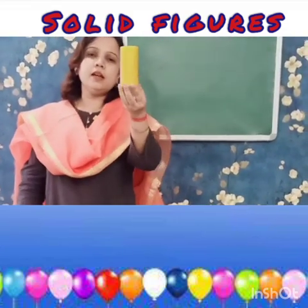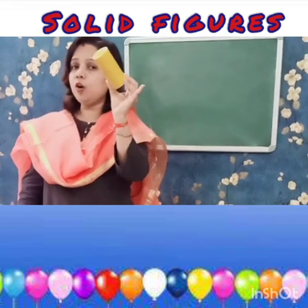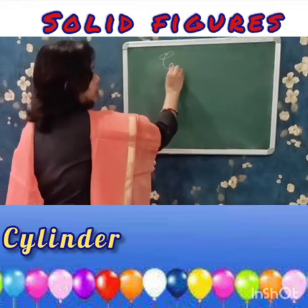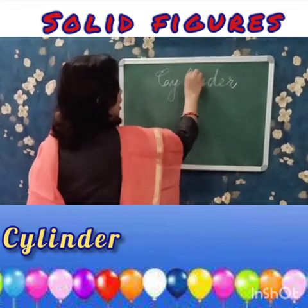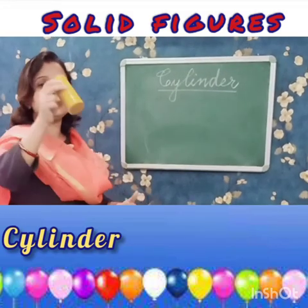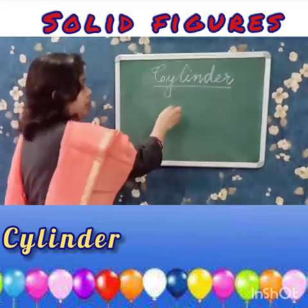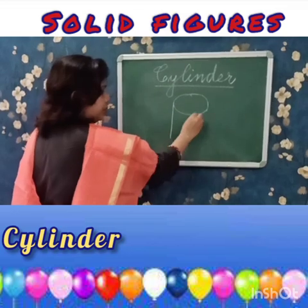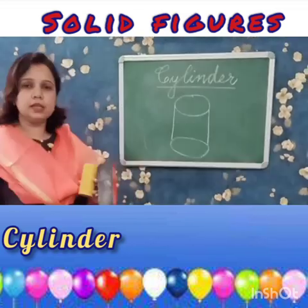Now let us learn about this solid figure. The name of this solid figure is cylinder. C-Y-L-I-N-D-E-R, cylinder. This is the shape of a cylinder. Now how do you draw a cylinder? So this way you make a cylinder.